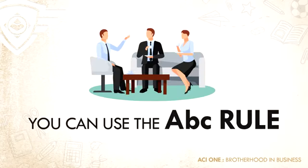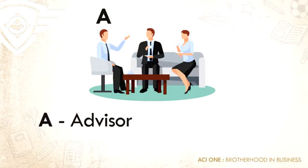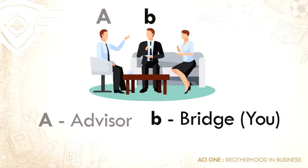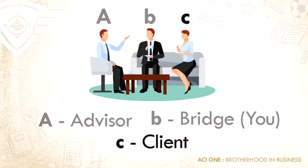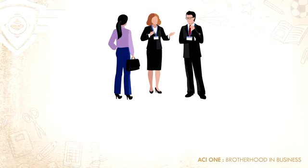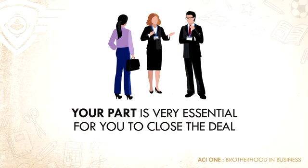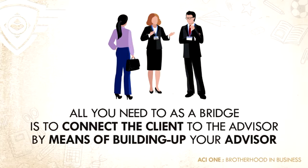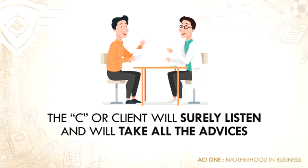You can use the ABC rule. A stands for Advisor, B stands for Bridge — which is you — and C stands for Client. The advisor is usually the sponsor or anybody who has more experience in the business with big results. The bridge — which is you — your part is essential to close the deal. All you need to do as a bridge is to connect your client to the advisor by building up your advisor to your client. The client will surely listen and take all the advice of the advisor because you built them up already.